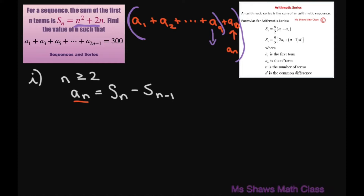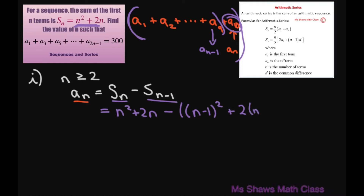So the sum of n minus 1 gives you a sub n minus 1, and subtracting gets you the last term. Using our formula, this is going to be n squared plus 2n minus, and then substituting n minus 1 in: n minus 1 squared plus 2 times n minus 1.